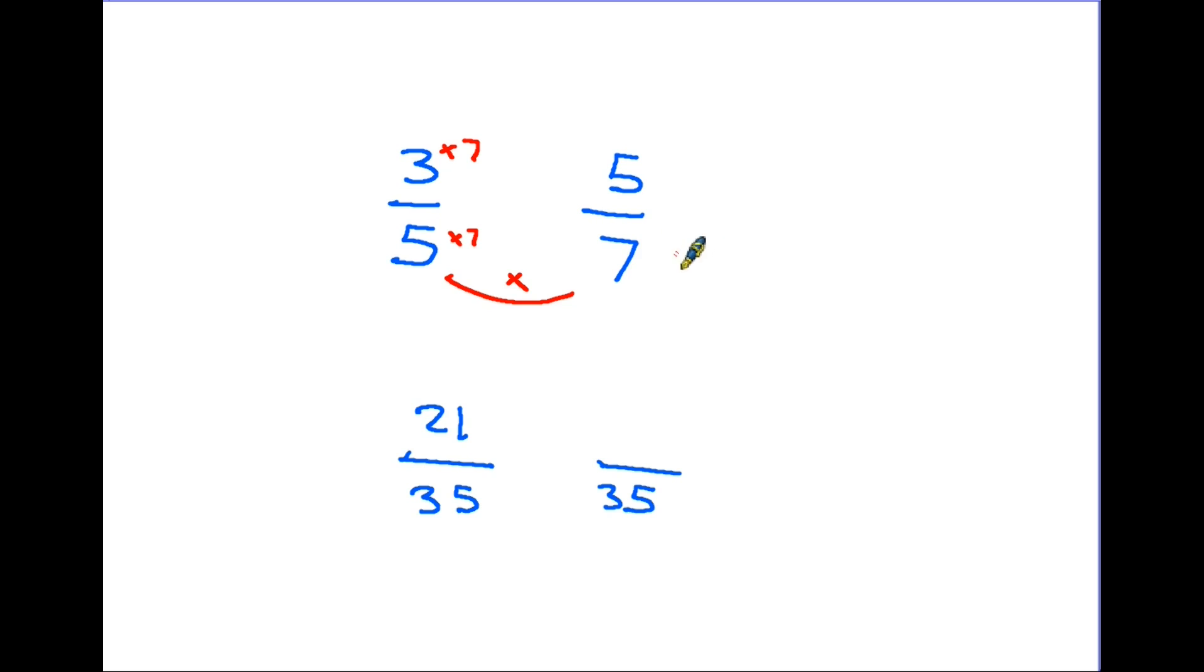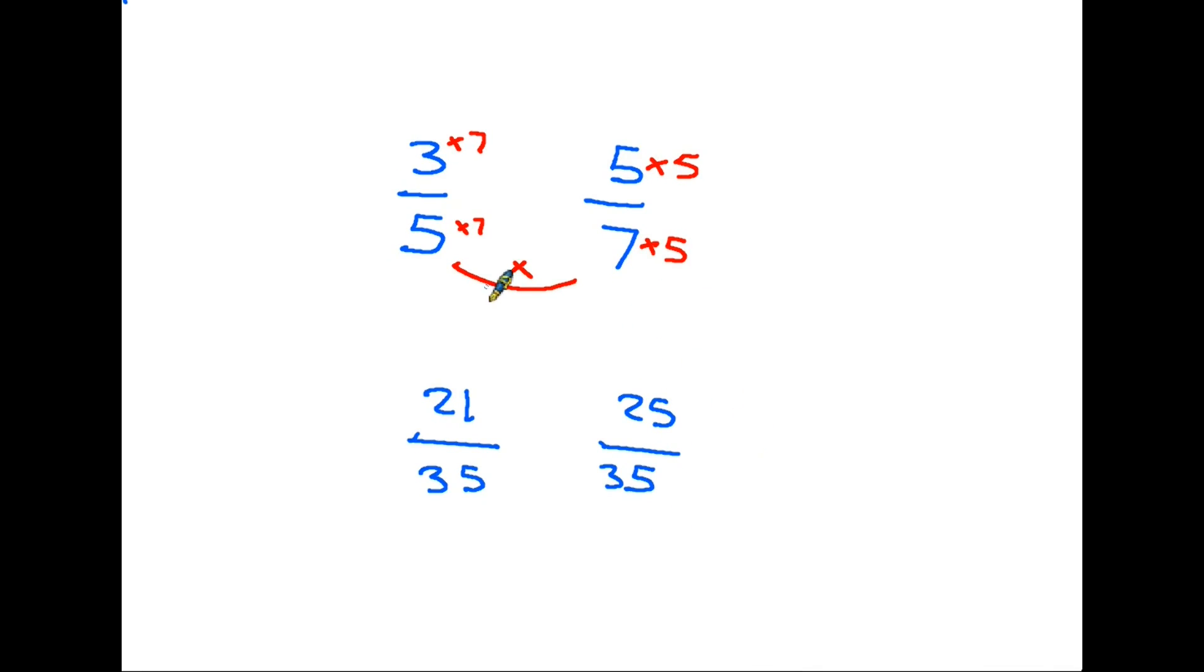We now do exactly the same to the right hand side fraction. So what did we do originally with the seven? Well we multiplied it by five, so we have to multiply the top one by five. In this case five times five is 25, and again we've created an equivalent fraction to 5 over 7. What we've achieved here by finding equivalence of the two top fractions whereby the bottom number is now the same, we can make a straightforward comparison between them.